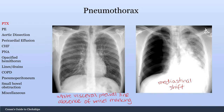One last finding for pneumothorax is what's called a deep sulcus sign. Sometimes you may have a pneumothorax that is very hard to spot, but the costophrenic angle goes all the way down. That is called a deep sulcus sign, and is another sign of a pneumothorax.